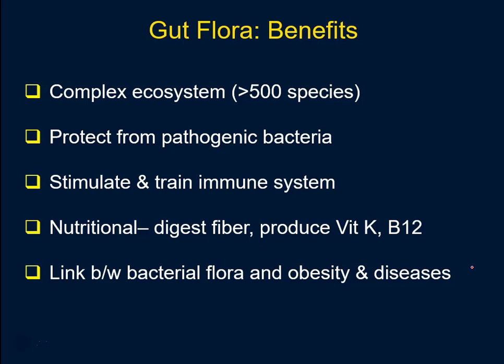Another way the normal flora protects the host from pathogens is by producing substances we recognize as bacteriocins. These are toxins produced by the normal flora — toxic to other invading bacteria, but not toxic to the host. So there's a little warfare going on inside the gut, and that warfare is good for us because this normal flora will fight off pathogenic strains. There's always a possibility that you can wipe out your normal flora, reducing that competition, and in that case pathogenic invaders will begin to take hold.